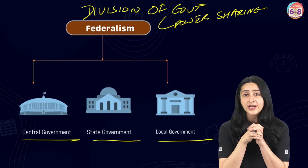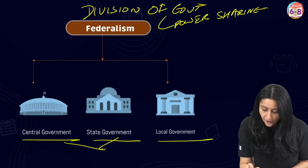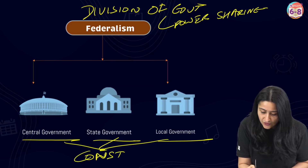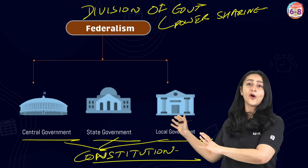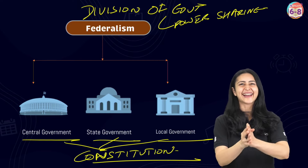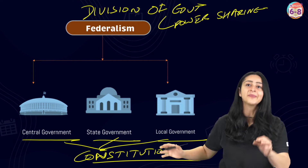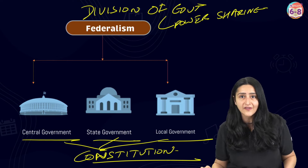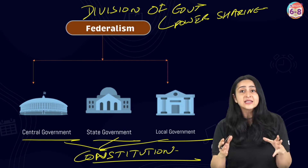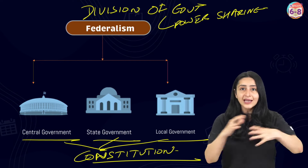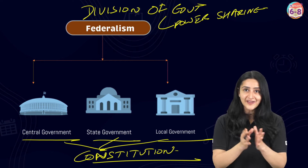An important point to keep in mind is that each level of government draws its authority from the constitution directly. The constitution directly lays down what the powers of these three tiers should be. This means that the state and local levels of government are not merely agents of the central government — they also enjoy autonomy in making decisions on various issues and are not merely obeying what the central government says.